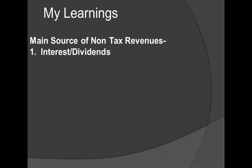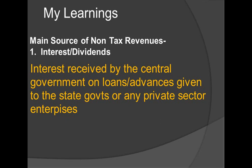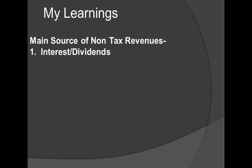Interest received by the central government on loans and advances to the state governments or any private sector enterprise is an important source of non-tax revenue. The government also receives dividends from public sector enterprises in which it holds some shares. For example, the government is a shareholder of a number of public sector enterprises like State Bank of India. When such public enterprises announce dividends for their shareholders, the government also receives dividends as one of those shareholders.